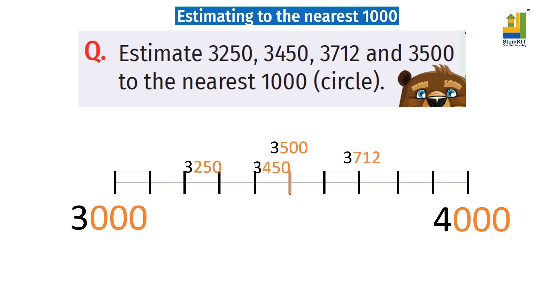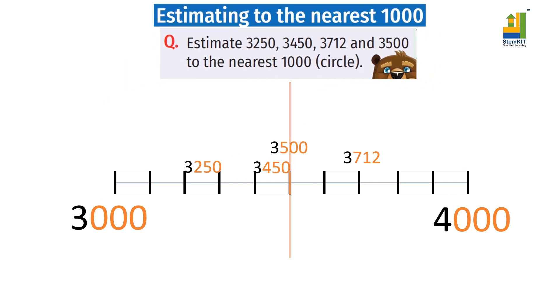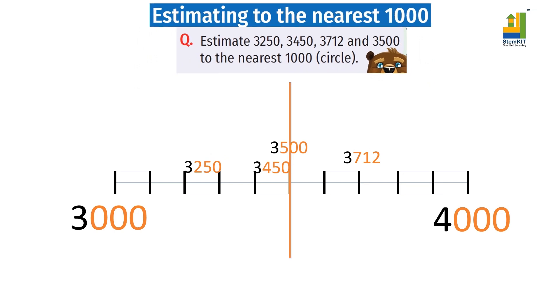Notice that two numbers, 3250 and 3450, are below the midpoint. 3500 and 3712 are on or above the midpoint.